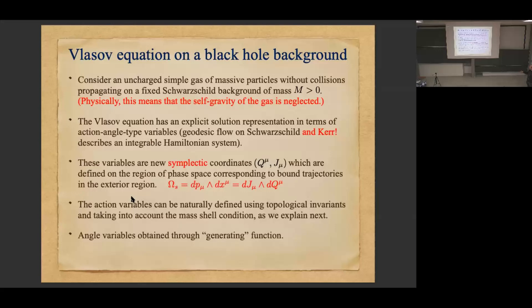These new coordinates q_μ, j_μ have the property that ω still has this form, so the Hamiltonian equations of motion are still the same in these variables. But now the Hamiltonian is much simpler in these new variables — that's the trick. The action variables j_μ can be defined quite naturally in terms of topological invariants taking into account the mass-shell condition. The angle variables can then be obtained through a generating function, similarly to what Markus presented in his course.